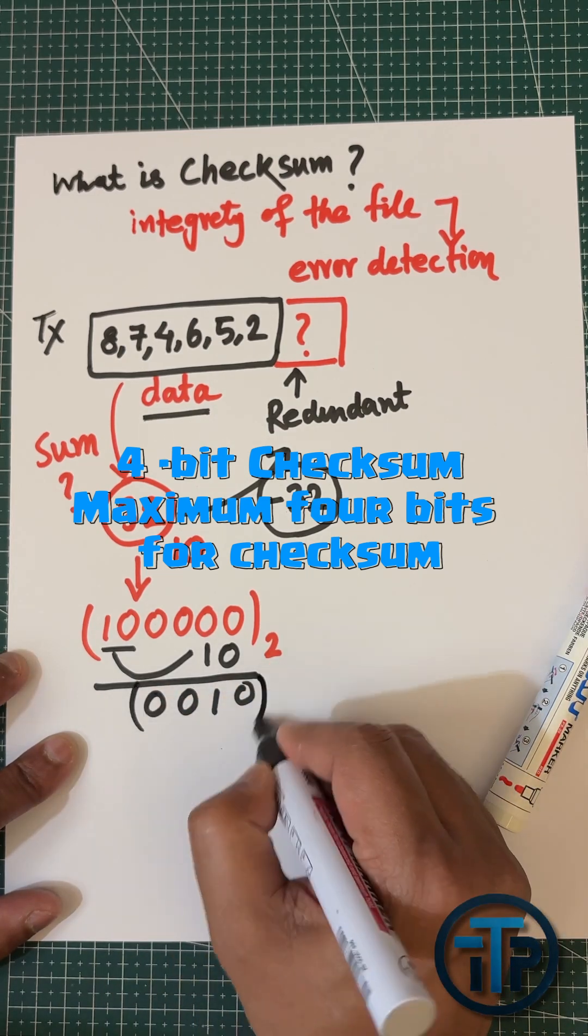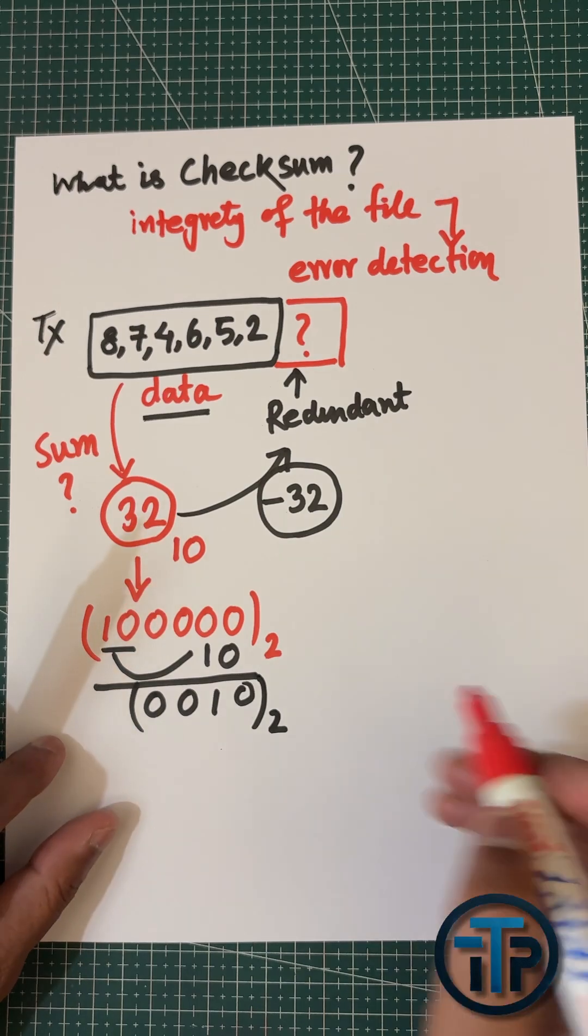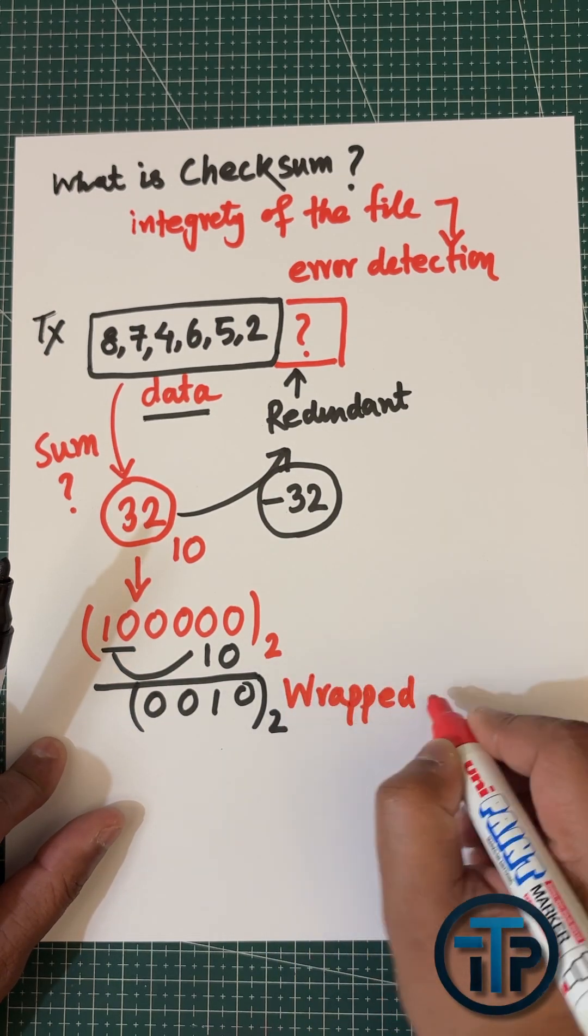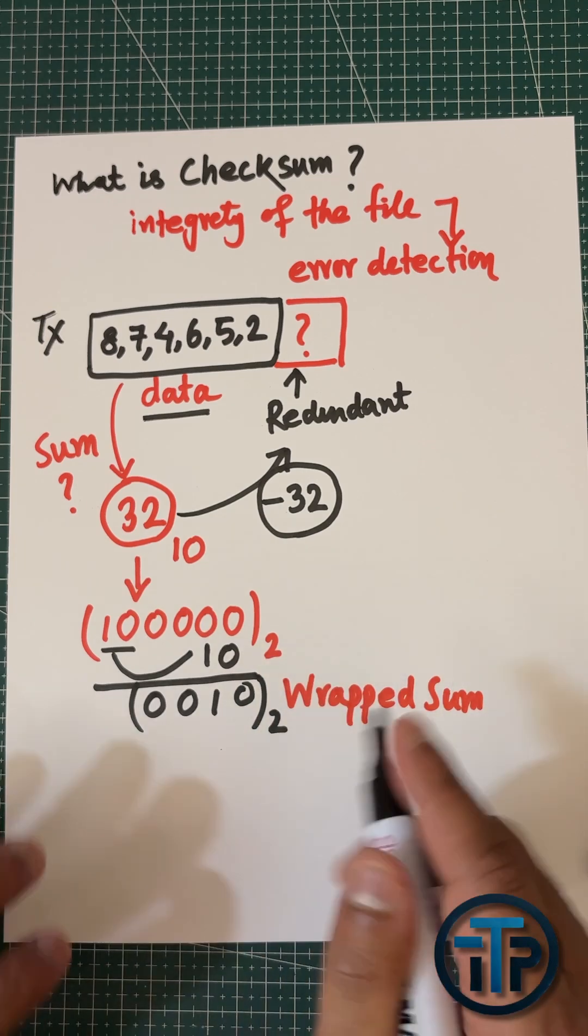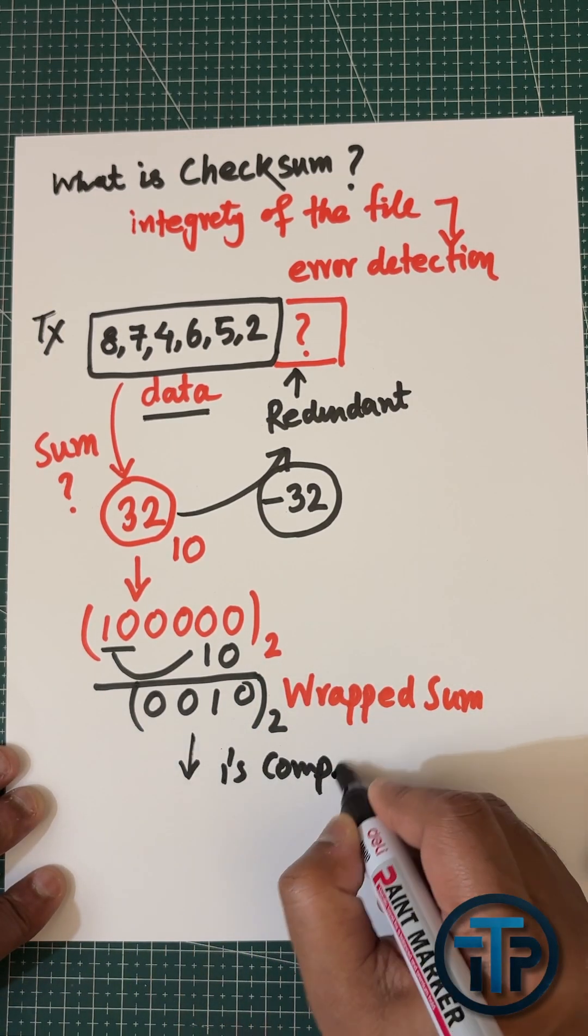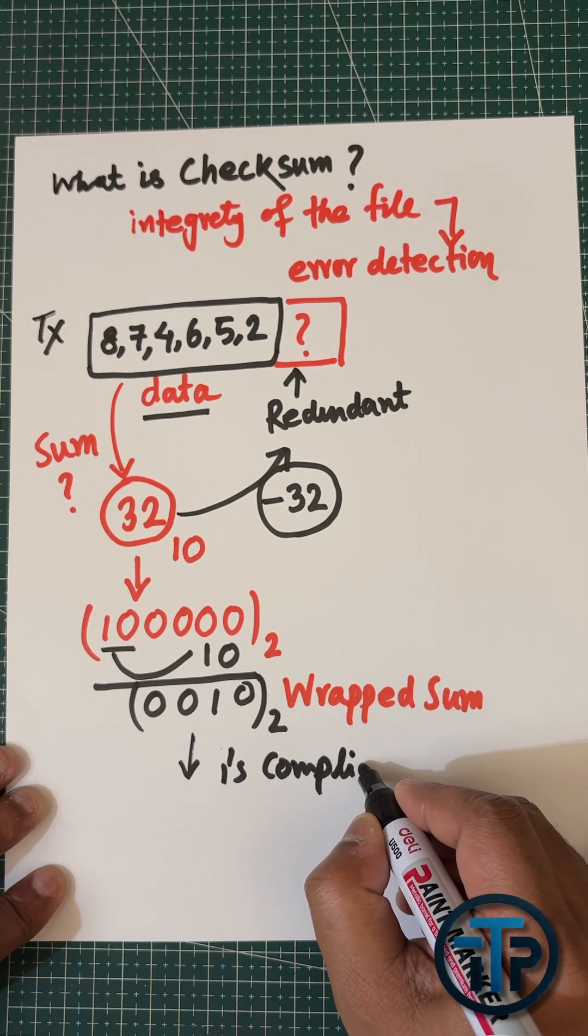So we have to do the wrapping process. Wrapping process means the last two digits you have to bring and you have to do the addition. That is actually your wrapped sum.